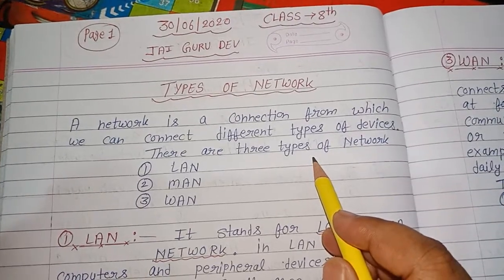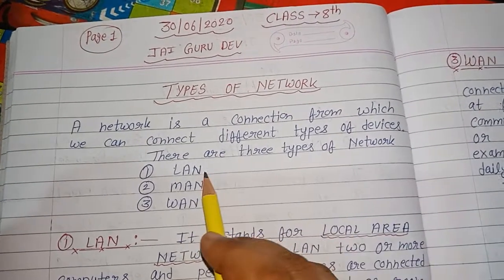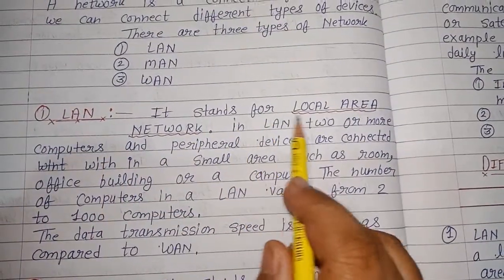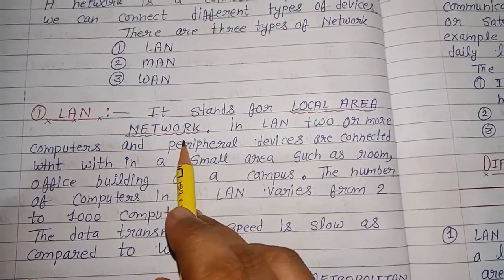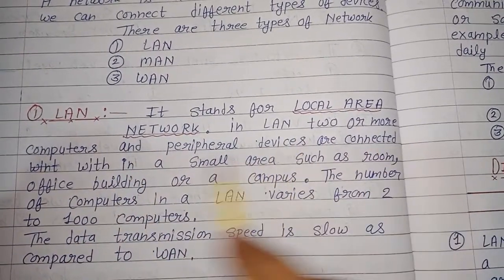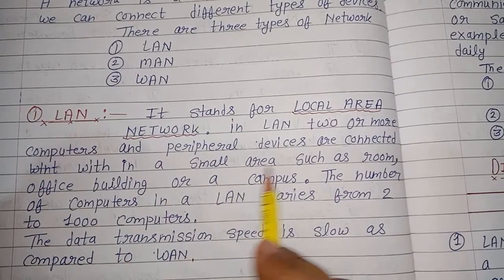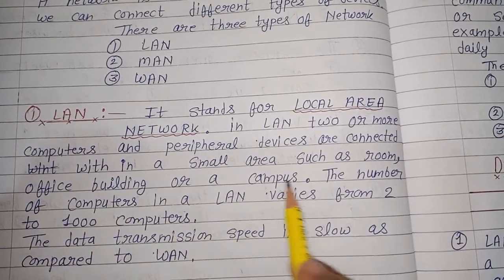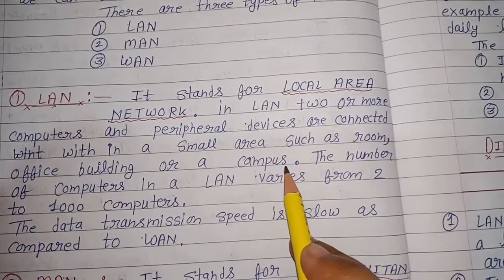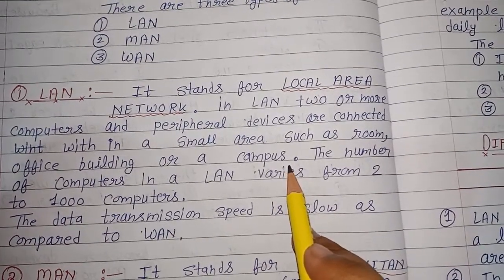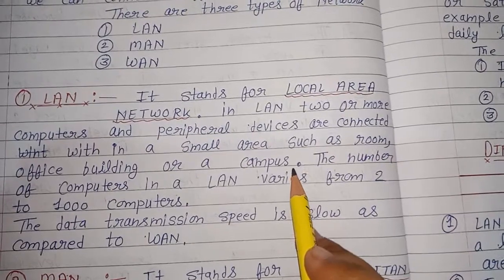There are three types of network: LAN, MAN, and WAN. Firstly, we will discuss what is LAN. It stands for Local Area Network. In LAN, two or more computers and peripheral devices are connected within a small area such as a room, office building, or a campus. Means, LAN में हम small area में computer और peripheral devices को एक दूसरे से connect करते हैं.